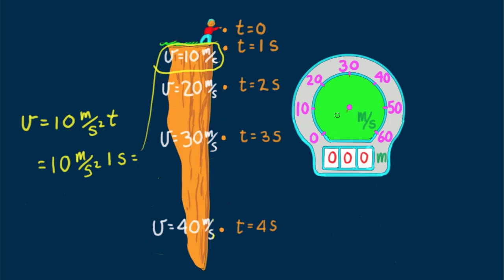At 1 second, v equals 10 meters per second squared times 1 second equals 10 meters per second. At 2 seconds, v equals 10 meters per second squared times 2 seconds equals 20 meters per second. At 3 seconds, v equals 10 meters per second squared times 3 seconds equals 30 meters per second. At 4 seconds, v equals 10 meters per second squared times 4 seconds equals 40 meters per second.